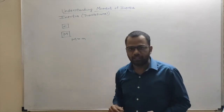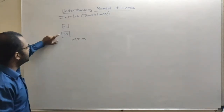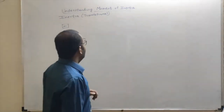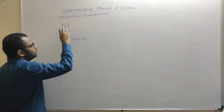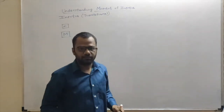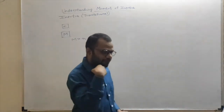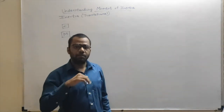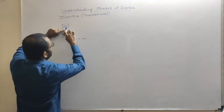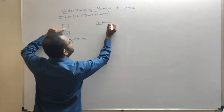Let us first talk about translational inertia, as the concepts are analogous to understanding moment of inertia. I have two masses — a smaller mass and a larger mass — both at rest. Now if I want to throw both of them such that they start moving with the same velocity, I will have to put some effort into both of them. I am throwing the object of mass m so that it now moves with velocity v.